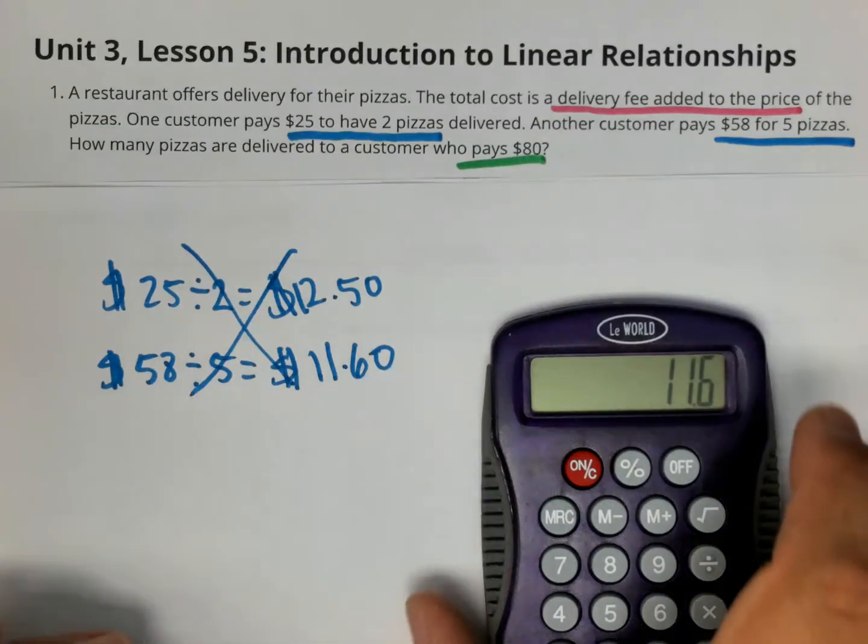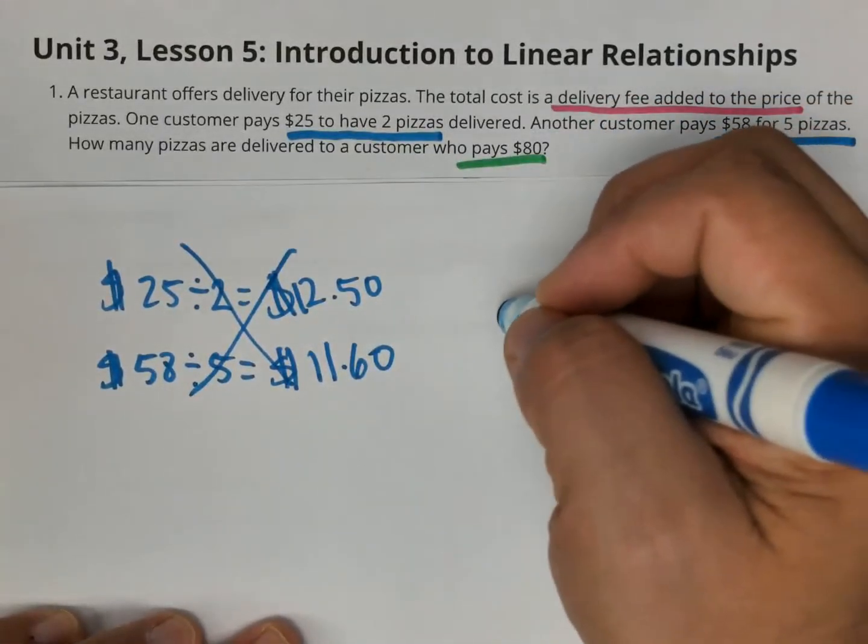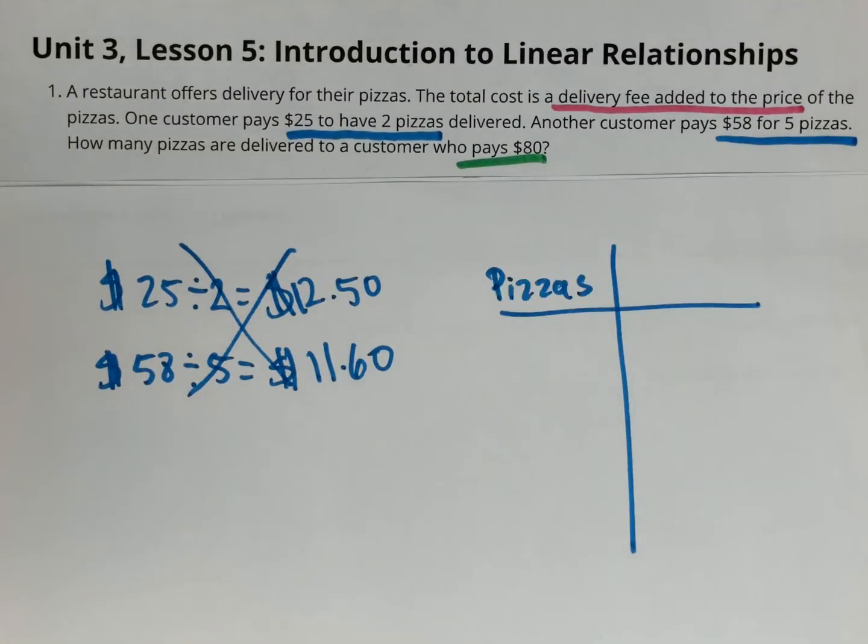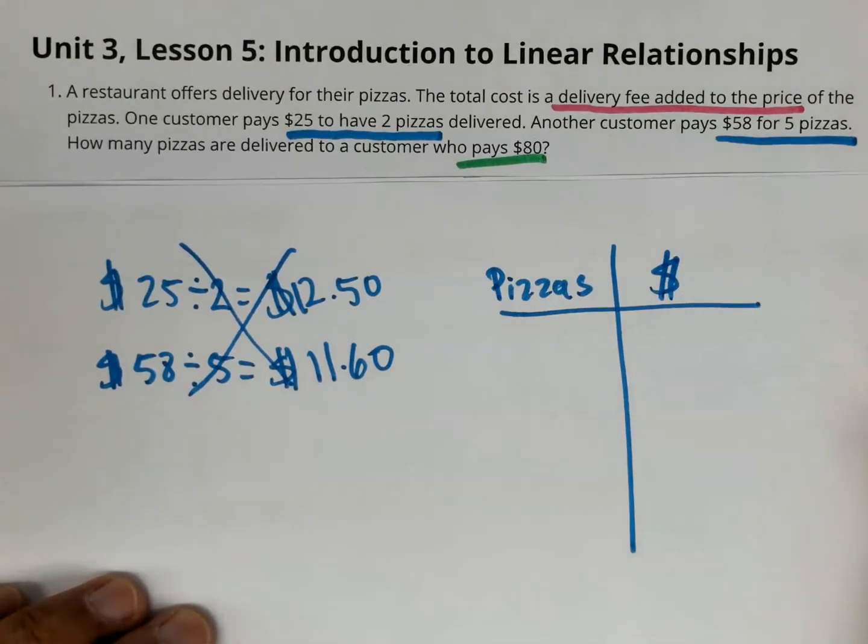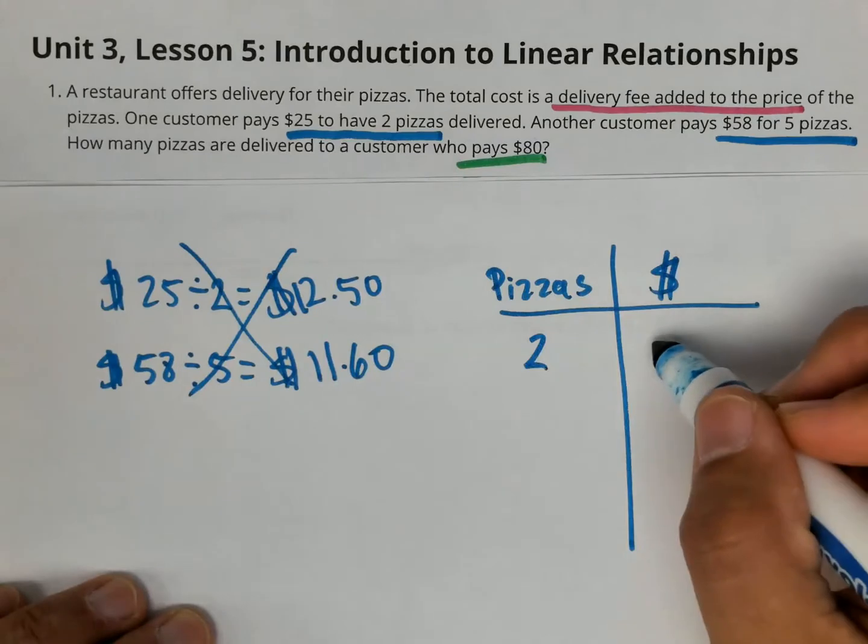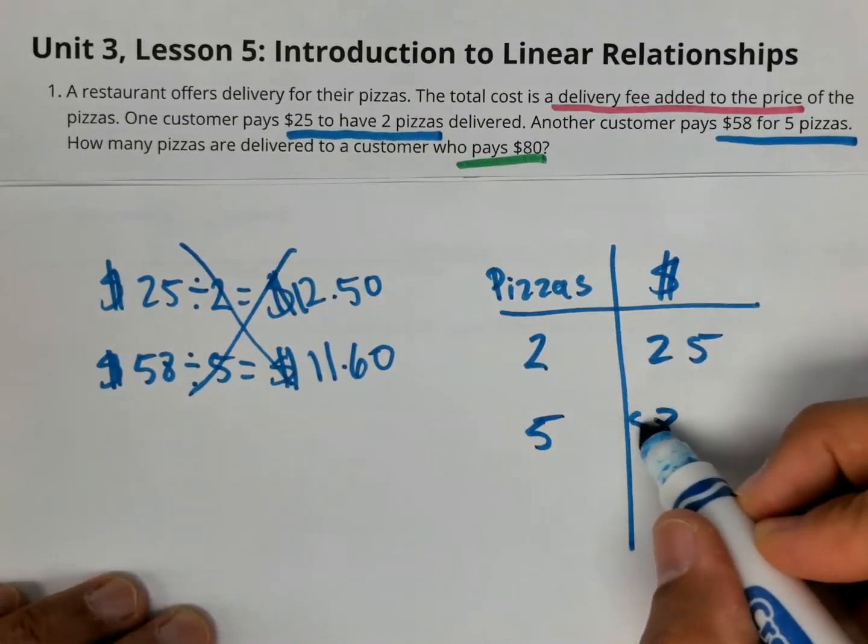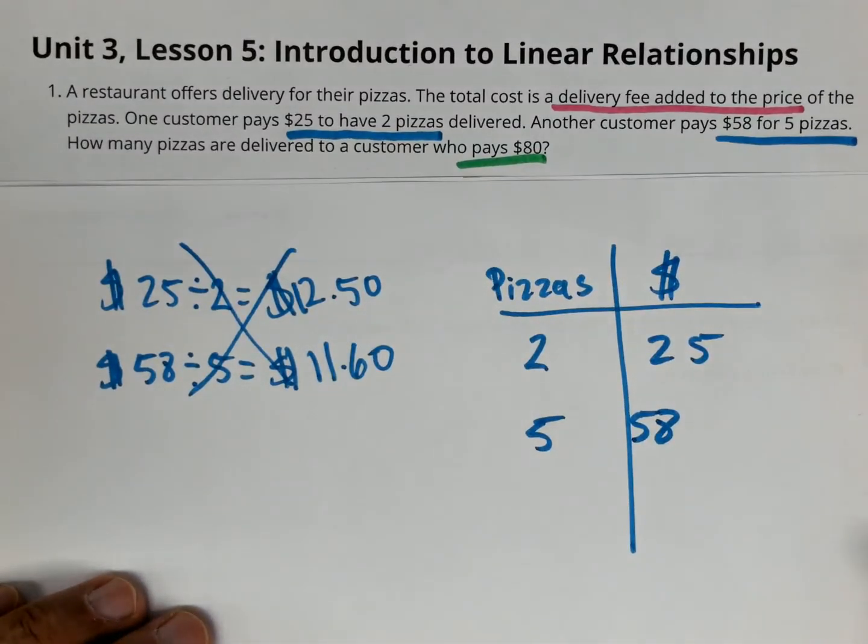So what we're going to do is we're going to make a table of values. Okay. This left one will be pizzas. The right column will be dollars. And I'm going to write the numbers that I know. I know two pizzas are $25 and five pizzas are $58. And so what I want to see here in the table is how many pizzas am I adding and how much is the price adding?